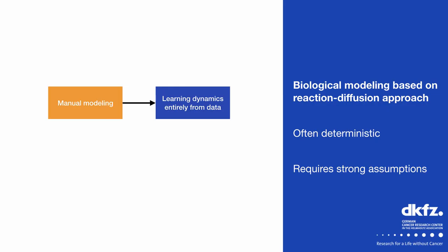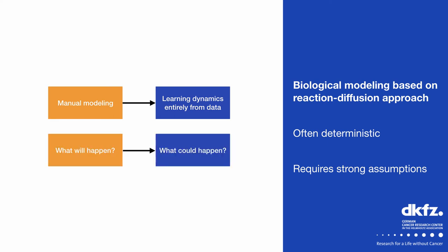We're basically trying to do the opposite. We replace manual modeling with an approach that learns the dynamics entirely from data. Because we assume that tumor growth is not a deterministic process, we're no longer asking 'what will happen?' but instead ask 'what are all the different things that could happen?'